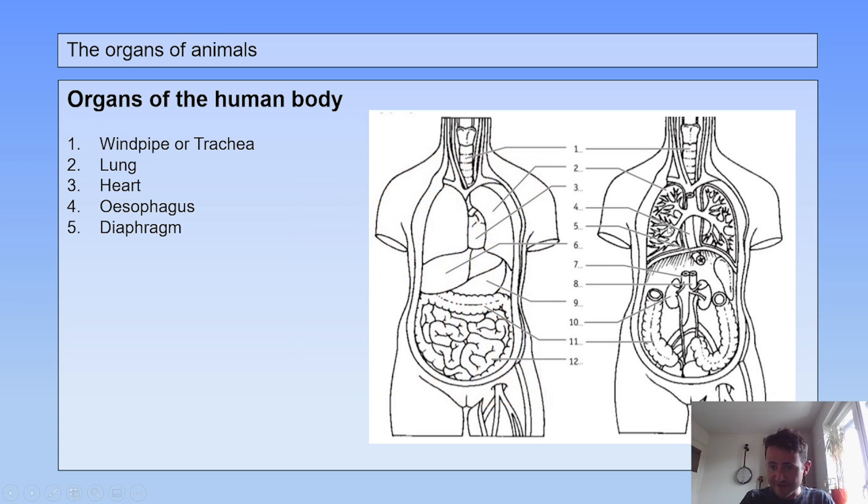Number five is the diaphragm. It separates your chest cavity from your abdominal cavity. Number six was the liver. Seven, the vena cava, a big blood vessel that transports oxygen-poor blood to your heart. This is eight, your aorta. It transports oxygen-rich blood to your complete body.